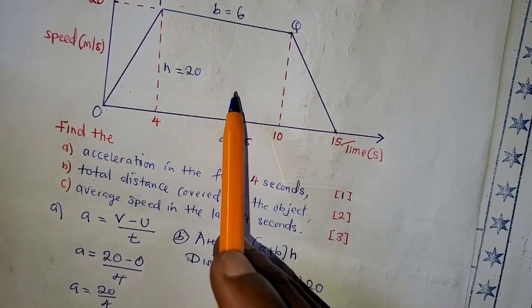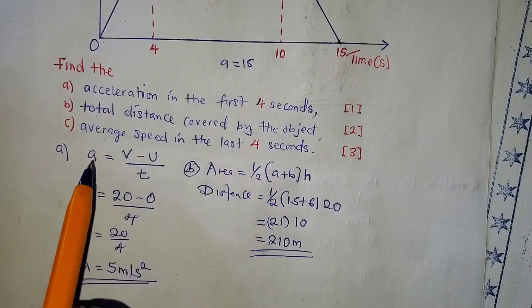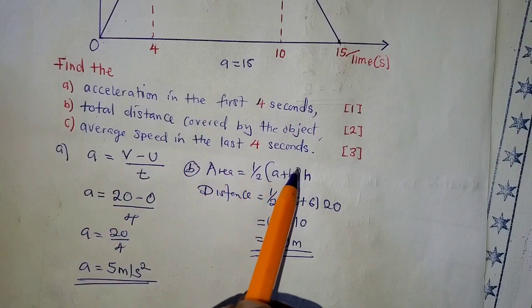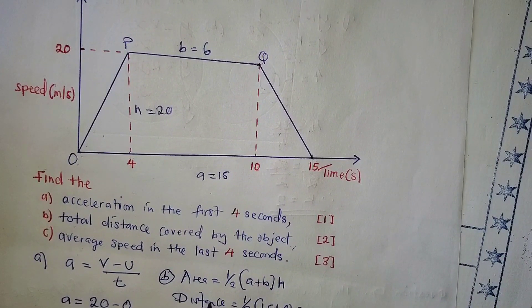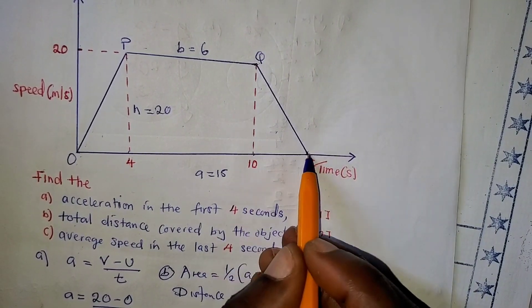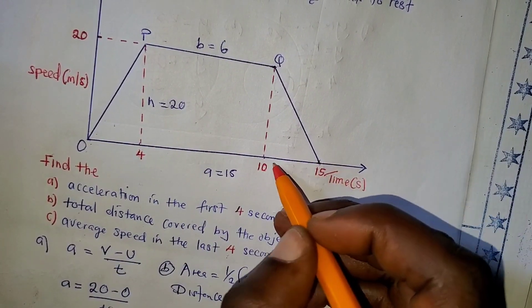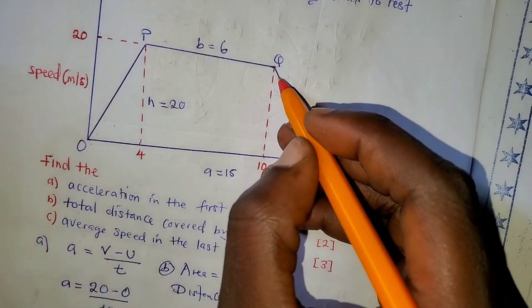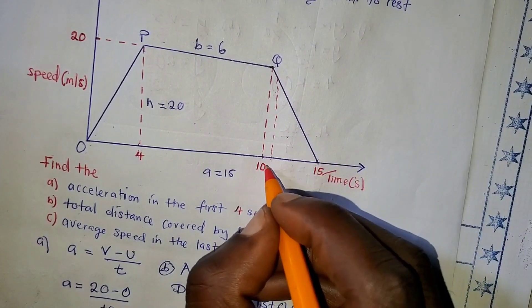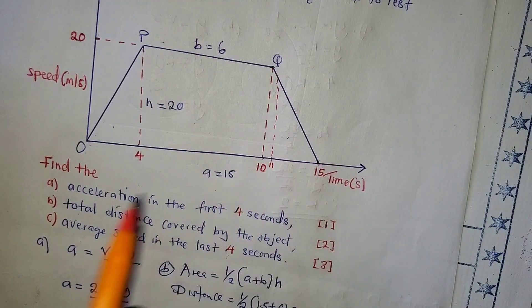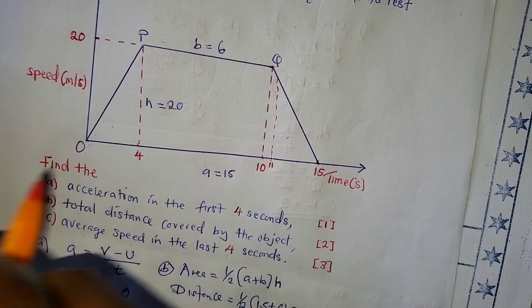The last part, worth three marks, asks us to find the average speed in the last four seconds. From 10 to 15 seconds is 5 seconds, not 4. So the last 4 seconds start at t = 11. From 11 to 15 is exactly four seconds — that is our window.